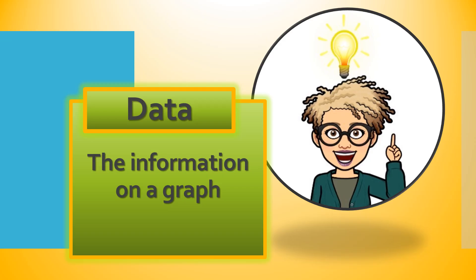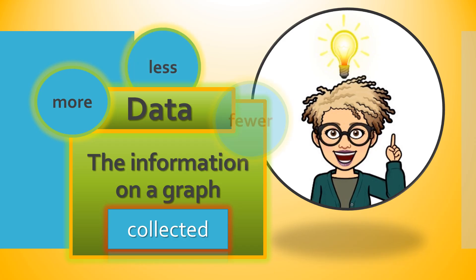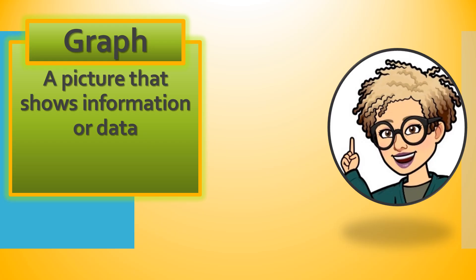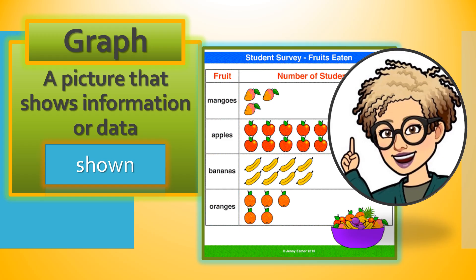Data is the information on a graph. And in order for the information to be made a part of the graph, it has to be collected. When we collect data, we are making considerations regarding more, less, and fewer comparisons. The graph is a picture that shows the information or the data. Here's a picture of a graph — a picture graph — but this graph is a special kind of graph.